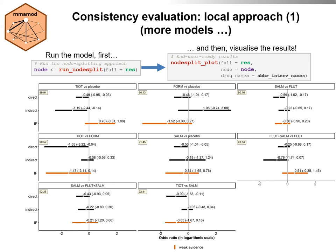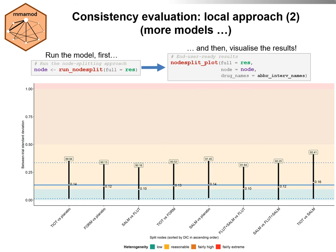We see that the 95% credible interval for the inconsistency factor crosses the vertical line of consistency in all plots. One may conclude that the consistency assumption holds. However, the point estimate is not even close to zero in all plots. The next graph is a reversed forest plot on the between-trial standard deviation after each split node, again sorted in ascending order of DIC. The blue horizontal lines refer to the posterior median and 95% credible interval of the common heterogeneity parameter.